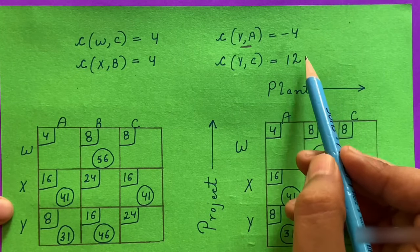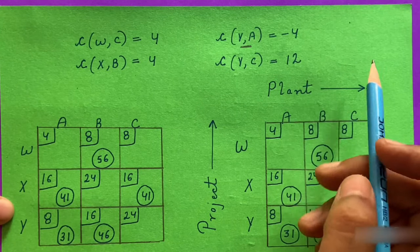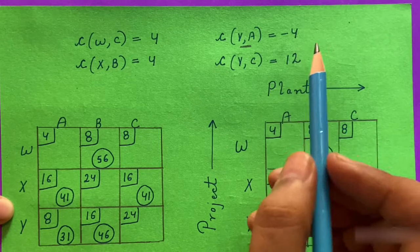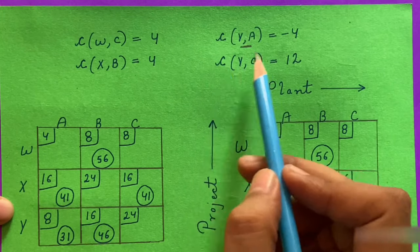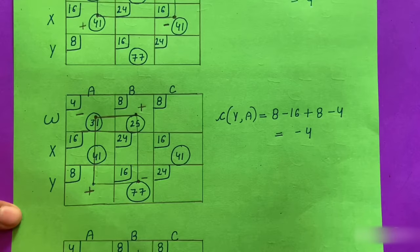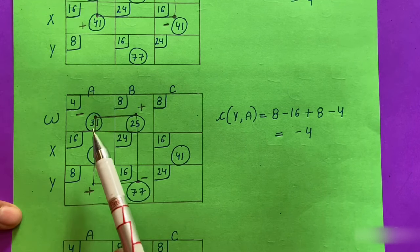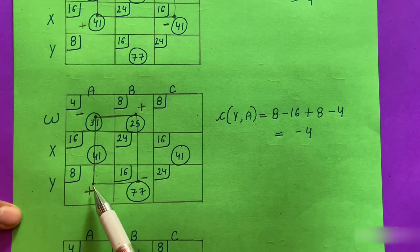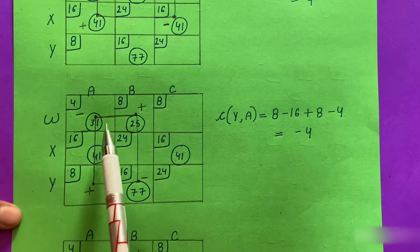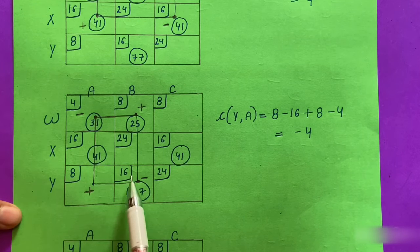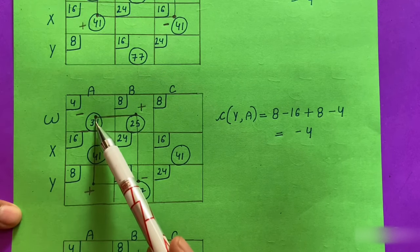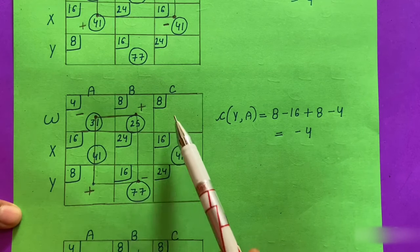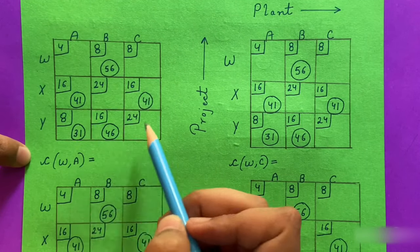There is still one negative value, so we must improve the YA cell. In the closed loop for YA, the cells with negative signs have the minimum value of 31. We add 31 to cells with positive signs and subtract 31 from cells with negative signs, producing the next improved matrix.